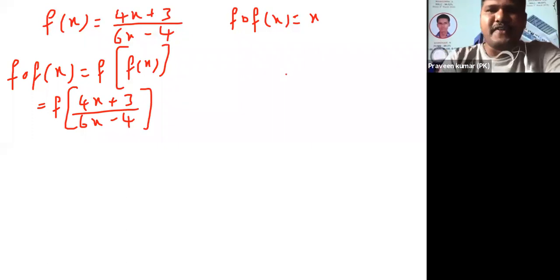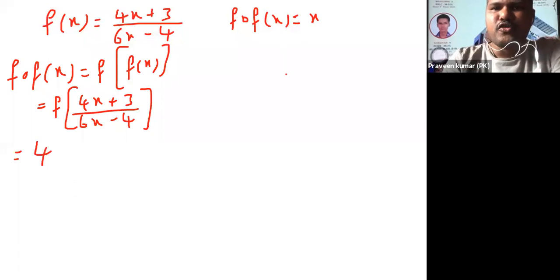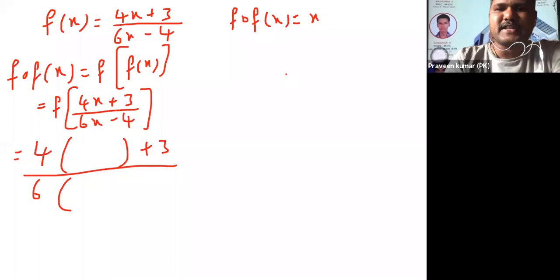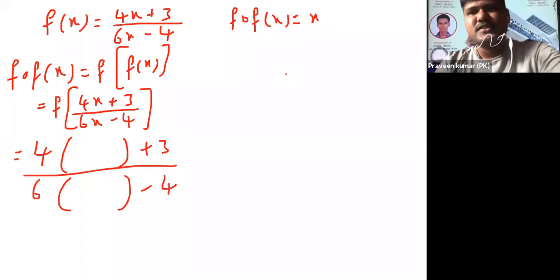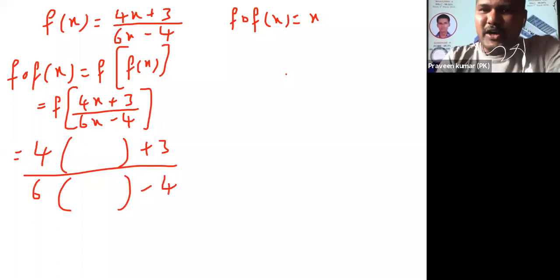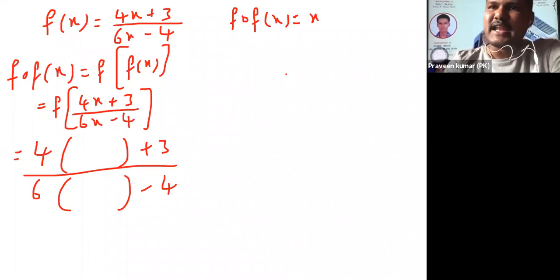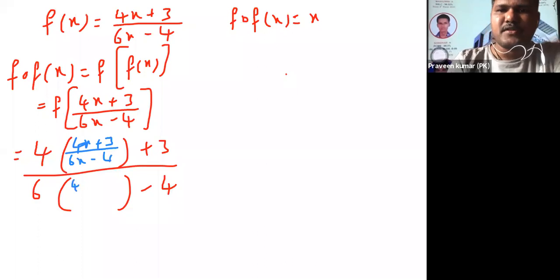You know what is f(x) again, so this is the very important step you need to understand. 4x plus 3 by 6x minus 4, my dear students. What is f(x)? I wrote in place of x. Again I am writing that value, that's why I can change the color.